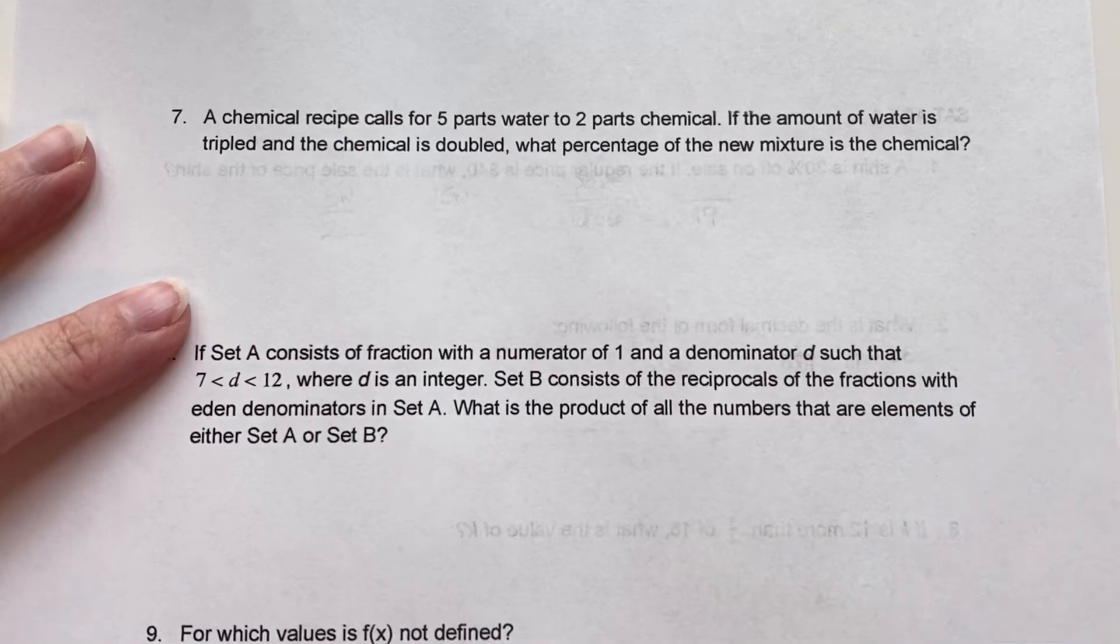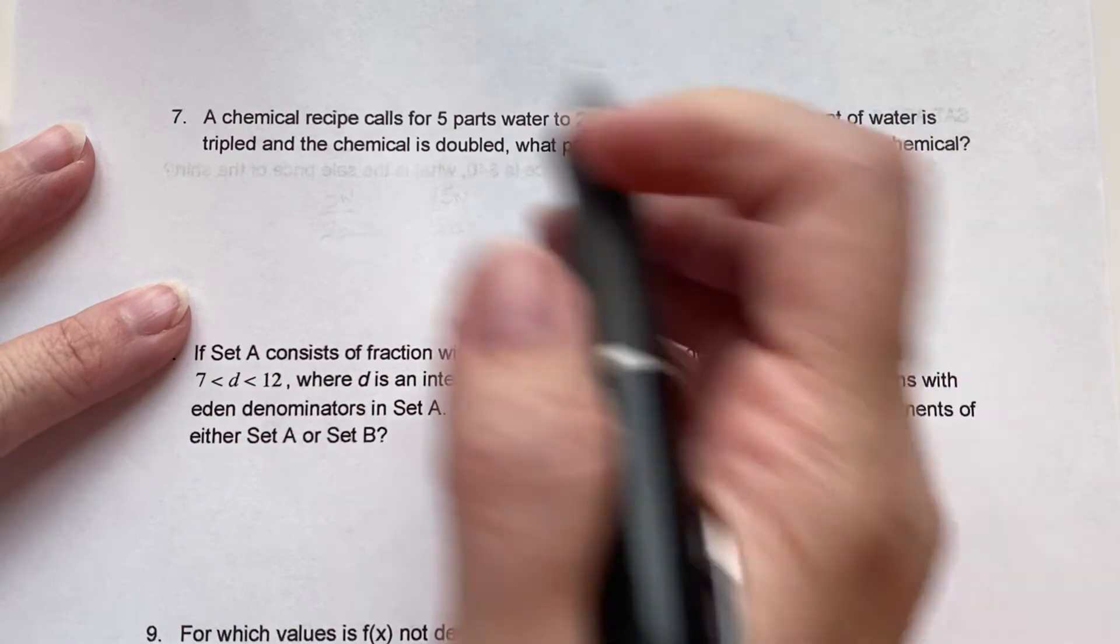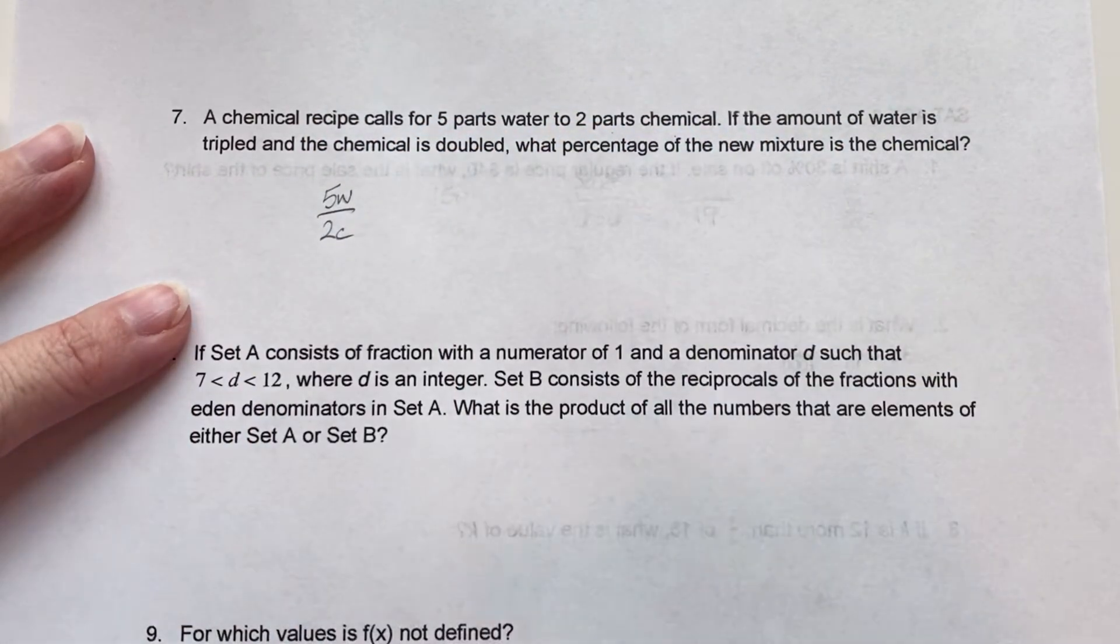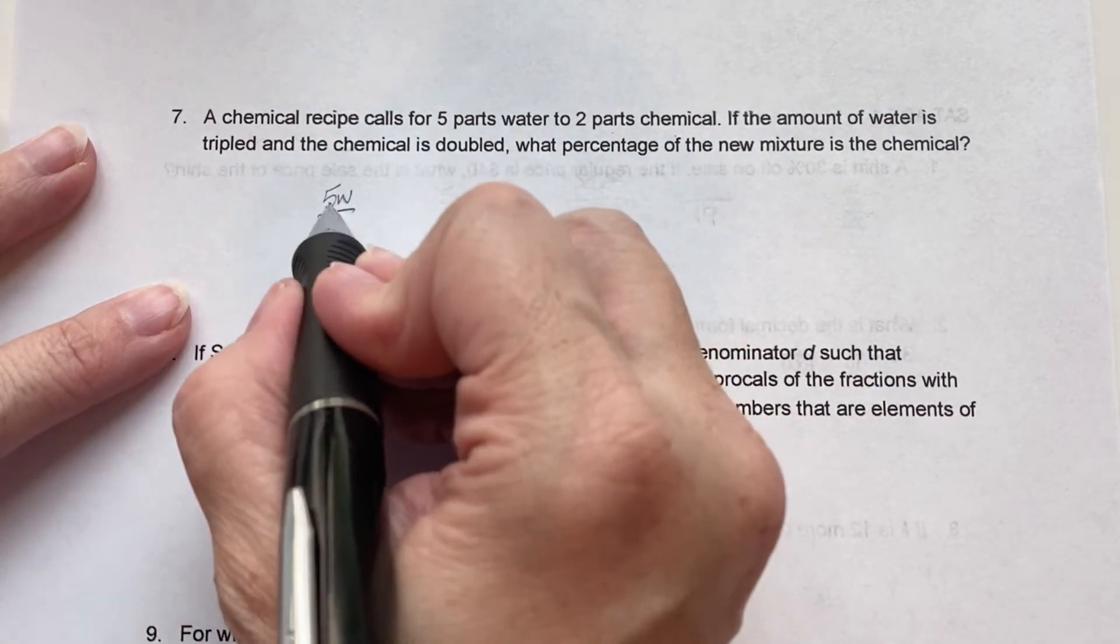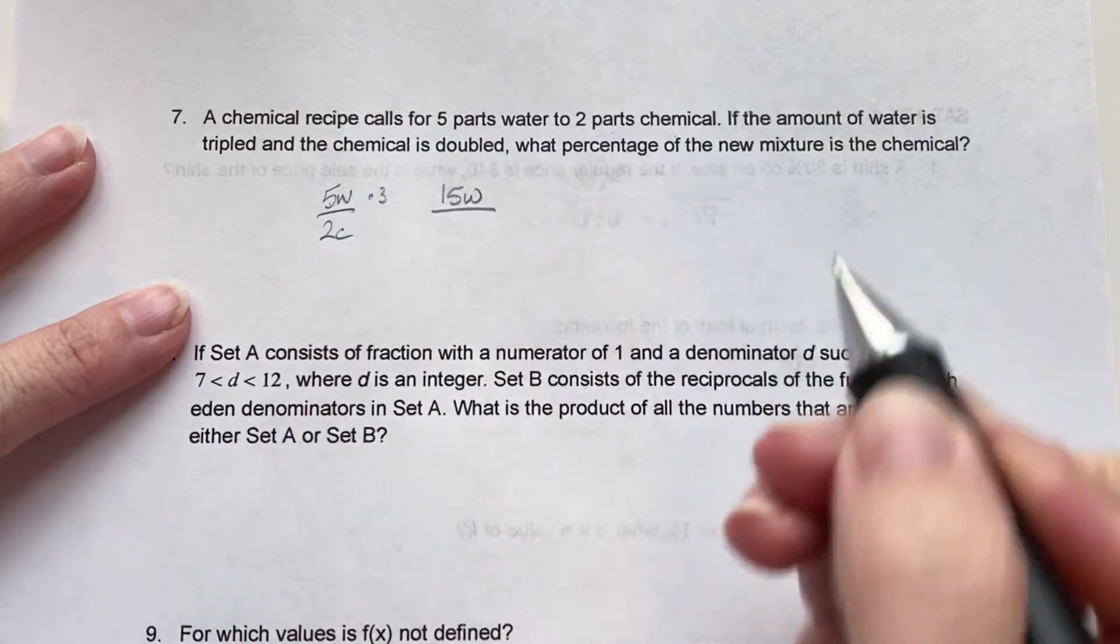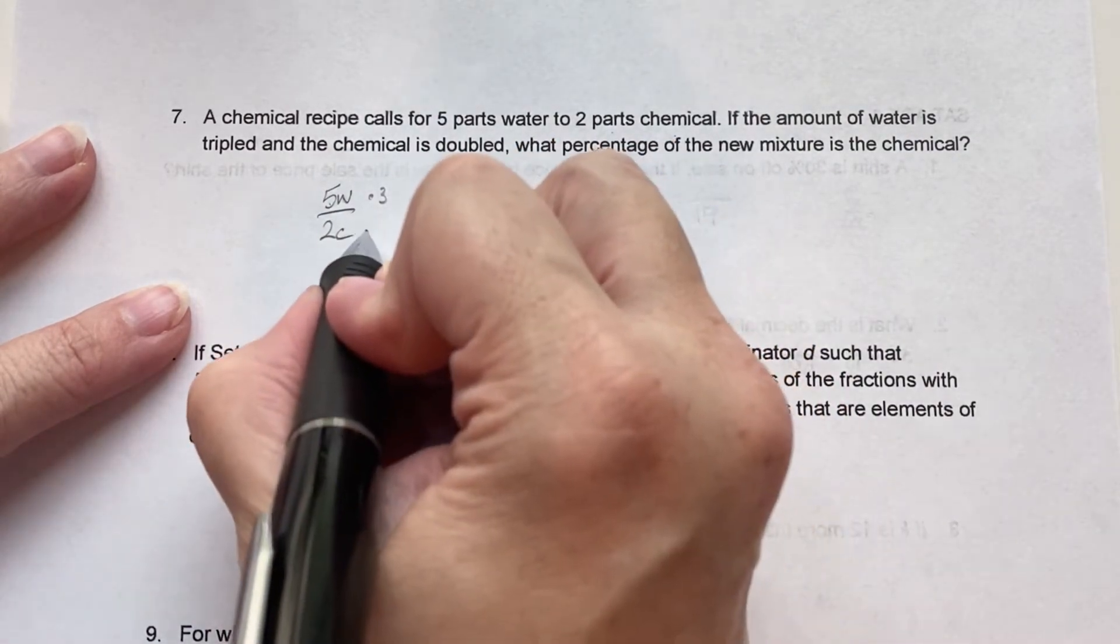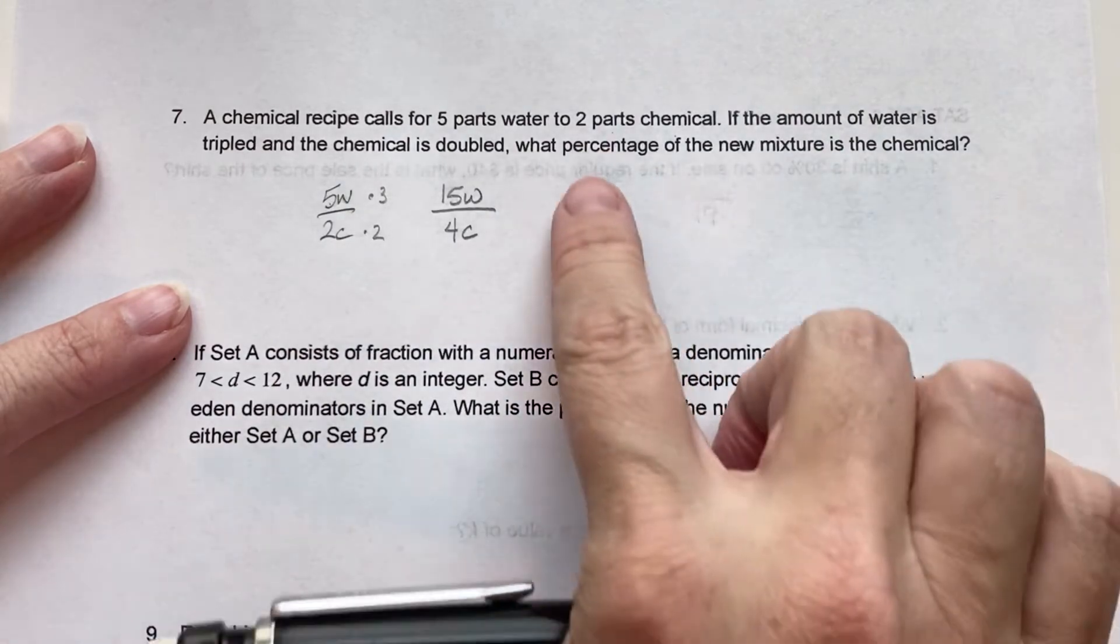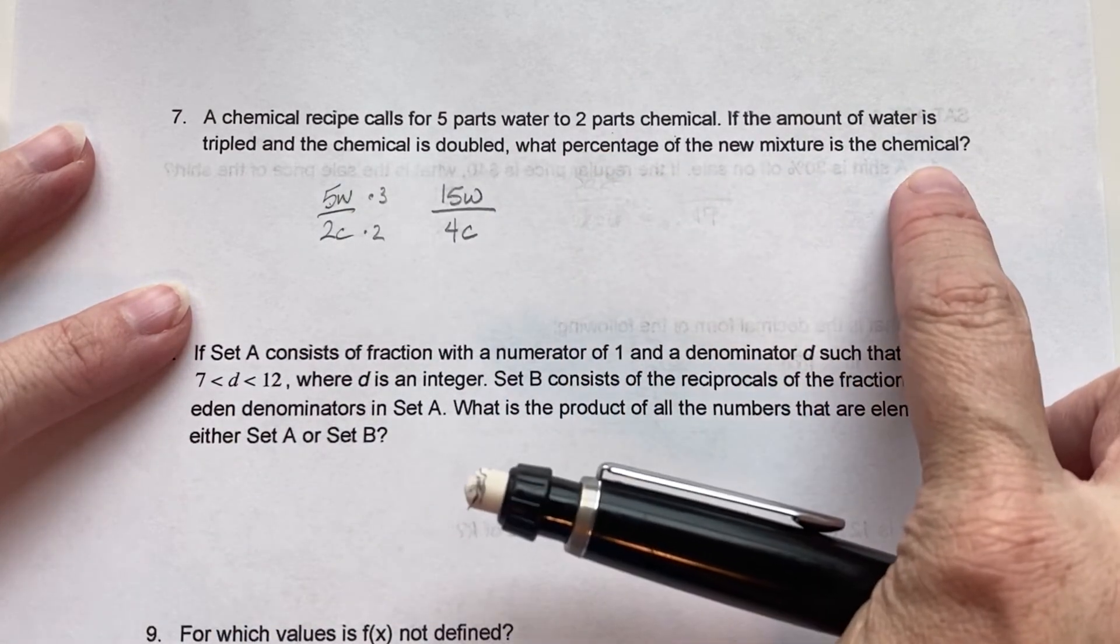A chemical recipe calls for 5 parts water to 2 parts chemical. So 5 water, 2 chemical. If the amount of water is tripled, so 5 times 3, 15 water. And the chemical is doubled times 2, so 4 chemical. What percentage of the new mixture is the chemical?